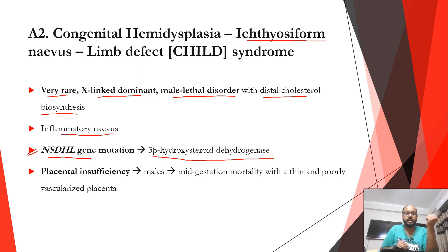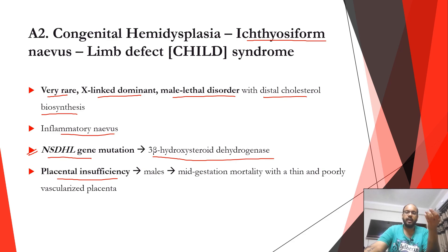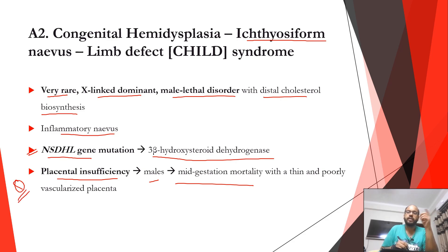Placental insufficiency can occur because cholesterol is required for proper placental development. Since CHILD is x-linked dominant, male fetuses have only one X chromosome. If that gene cannot supply proper cholesterol synthesis, the placenta cannot maintain the fetus, leading to mid-gestational mortality with a thin and poorly vascularized placenta. Any history of placental loss in prior pregnancies should raise suspicion for x-linked dominant ichthyosiform disorders.